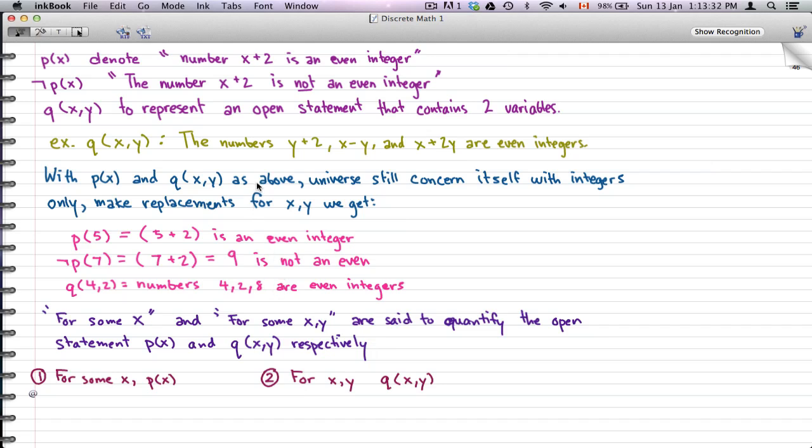For example, 'the numbers y plus 2, X minus Y, and X plus 2Y are even integers.' Now with p(x) and q(x,y) as above, the universe still concerns itself with integers, and we can only make replacements for X and Y from that universe.